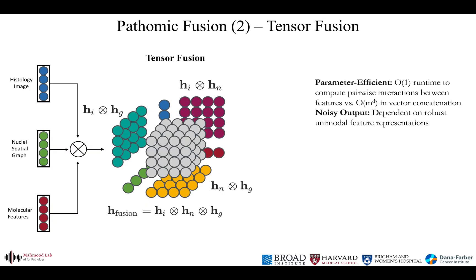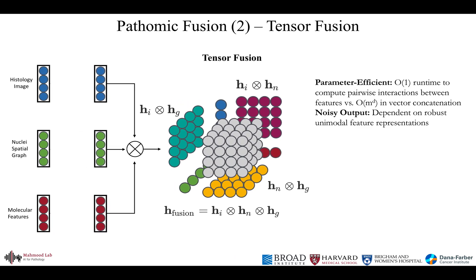Following the construction of the three unimodal feature representations of CNNs, GCNs, and MLPs, we build a multimodal representation using the Kronecker product of these three modalities. The joint multimodal tensor computed by the matrix outer product of these feature vectors captures important unimodal, bimodal, and trimodal interactions of all features. For example, if all unimodal features are 32×1 feature vectors, each fusion is a 32×32×32 tensor that forms in a 3D Cartesian space. To decrease the impact of noisy features during multimodal training, we employ a gating-based attention mechanism that controls the expressiveness of features of each modality. Our gating mechanism regularizes redundant features and reduces the size of the feature space before computing the Kronecker product.